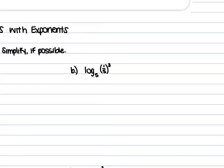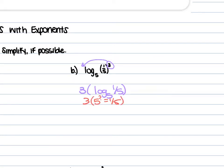For B, we have log₅ of (1/5) raised to the 3rd power. The 3 comes out front: 3 times log₅ of 1/5. 5 to what power is 1/5? It's negative 1. So we do 3 times negative 1, which is negative 3.